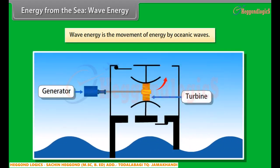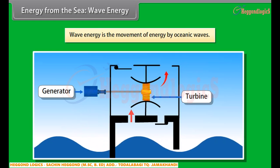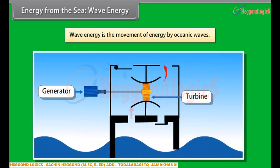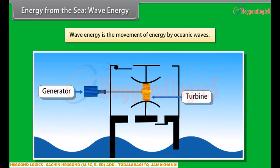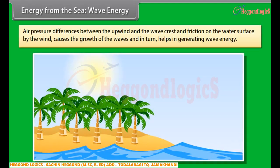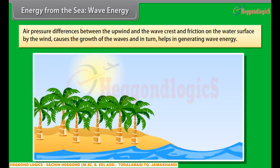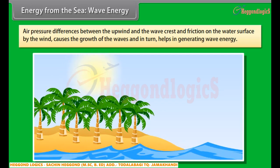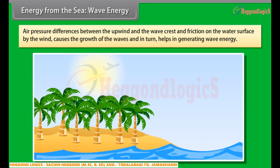Wave energy is the generation of energy by oceanic waves. We can capture this energy to do useful work, for example electricity generation, water desalination, or the pumping of water into reservoirs. Waves are generated by wind passing over the surface of the ocean. As long as the waves move slower than the wind speed above them, there is an energy transfer from the wind to the waves. Both air pressure differences between the upwind and the wave crest, as well as friction on the water surface by the wind, cause shear stress that drives the growth of the waves and generates wave energy.